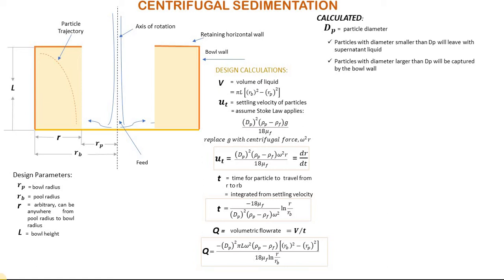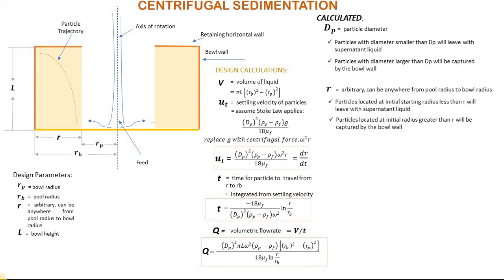R is arbitrary, meaning it can be anywhere from pool to bowl radius. Particles located at an initial starting radius less than R will leave with the supernatant liquid, and particles located at an initial radius greater than R will be captured by the bowl wall.